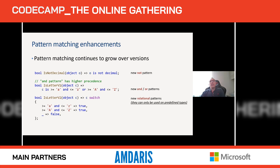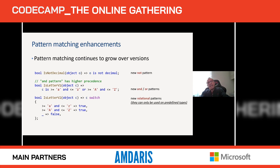If you want to follow the discussions very closely, the C# Lang repository on GitHub is open to anyone. You can make proposals, ask questions, see what happens, and subscribe to receive notifications when someone posts. There is no compiler code there — it's just language design. The compiler code is on the dotnet/Roslyn repository, which is open source as well.